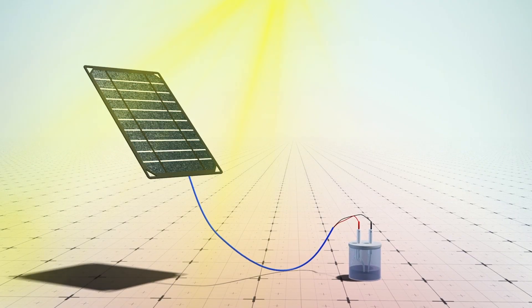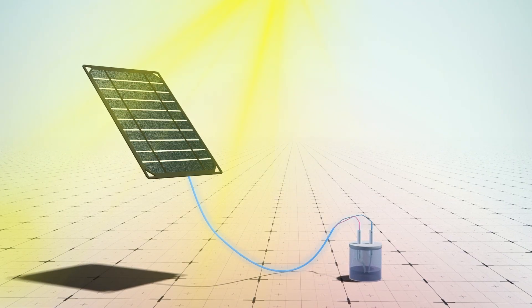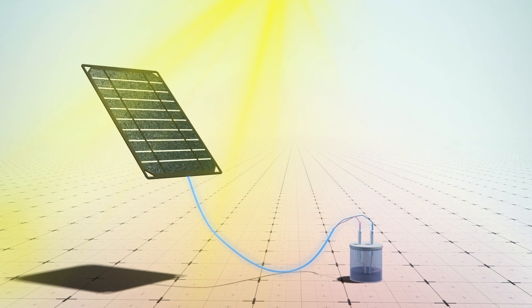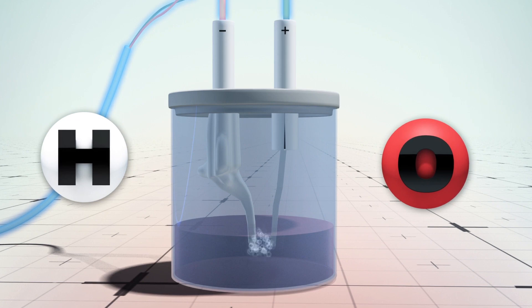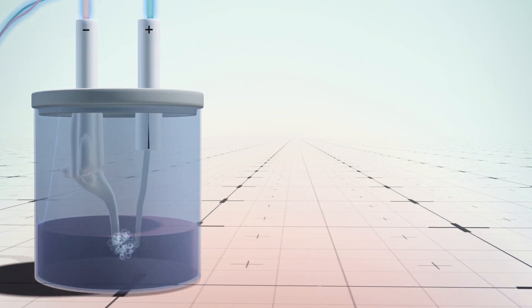A new system developed by a team of Stanford scientists uses solar cells to power two electrodes in water, causing hydrogen gas to come out of the cathode and oxygen to come out of the anode.